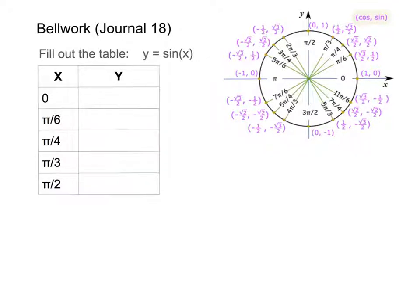We're in Journal 18 here. What it's asking you to do for the bell work is: given the equation y equals sine x — this equation has trig functions in it — fill out the table. I've chosen some x values for you to plug into the function to find y. I also placed a unit circle here. If you're taking notes and putting this in your journal, you don't need to draw the unit circle, since most of you already have one. I drew one so I can talk to you using it.